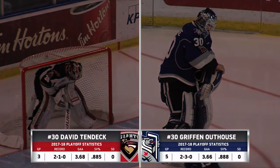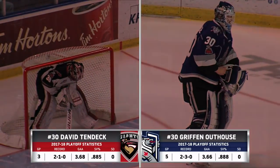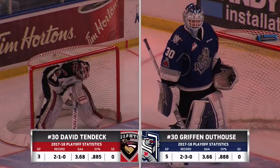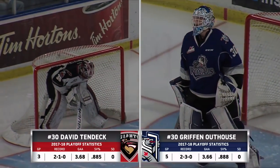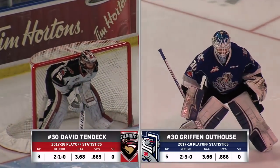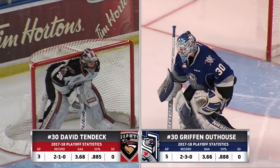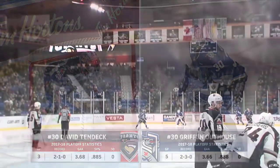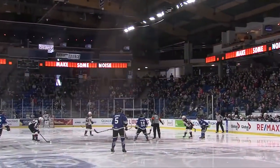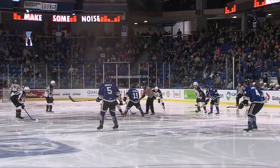For the Victoria Royals it's Griffin Outhouse in goal. Outhouse is 2-3 for the playoffs with a 3.66 goals against average and an .888 save percentage. At the other side for the Giants it's David Tendek, 2-1 with a 3.68 goals against and an .885 save percentage.